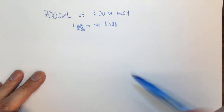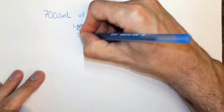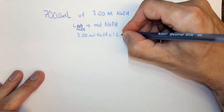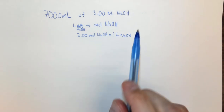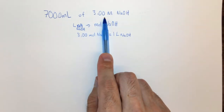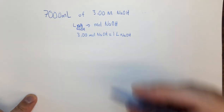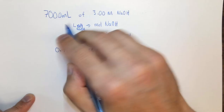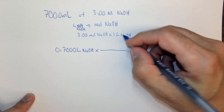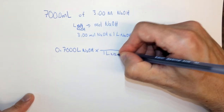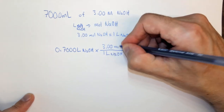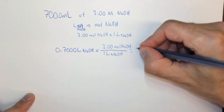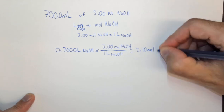To go from liters of NaOH to moles of NaOH we need an equality: 3.00 moles of NaOH equals 1 liter of the NaOH solution, because this is moles per liter. Starting with 0.7000 liters of NaOH, we multiply: one liter of NaOH on the bottom, 3.00 moles of NaOH on top. Rounding to three significant figures, you find it's 2.10 moles of NaOH.